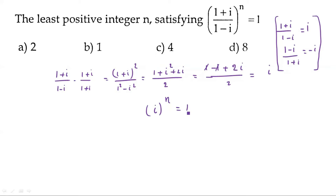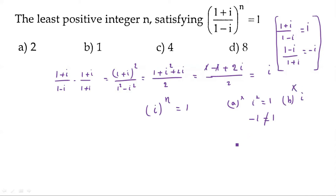So we need i^n = 1. We check: i^1 = i, i^2 = -1, i^4 = i²×i² = (-1)×(-1) = 1. So i^4 = 1. The least value of n is 4. Option C is correct.